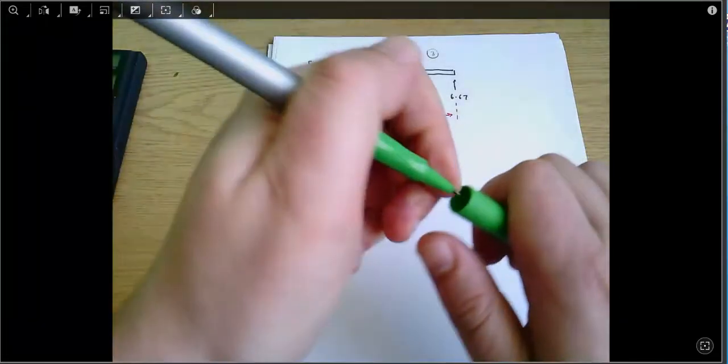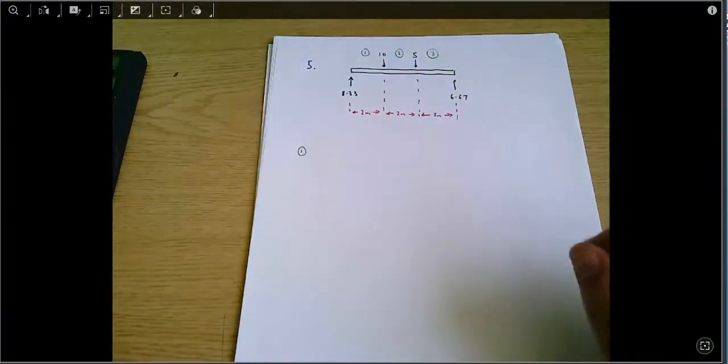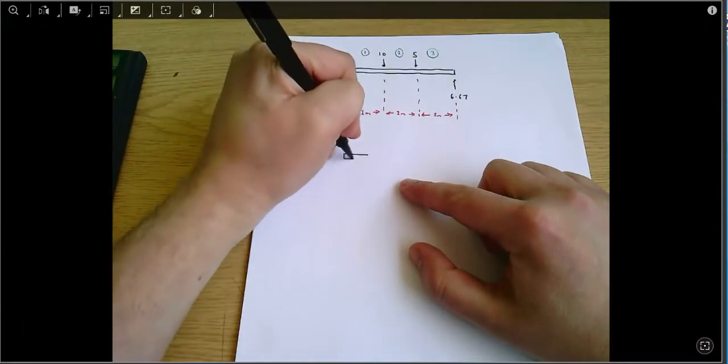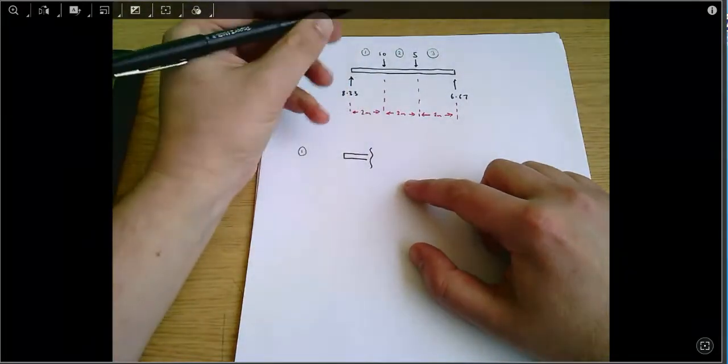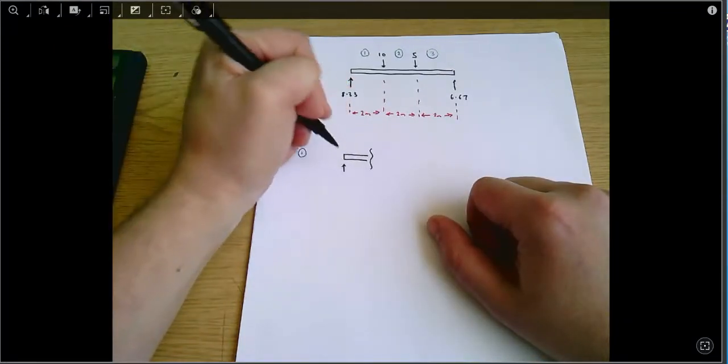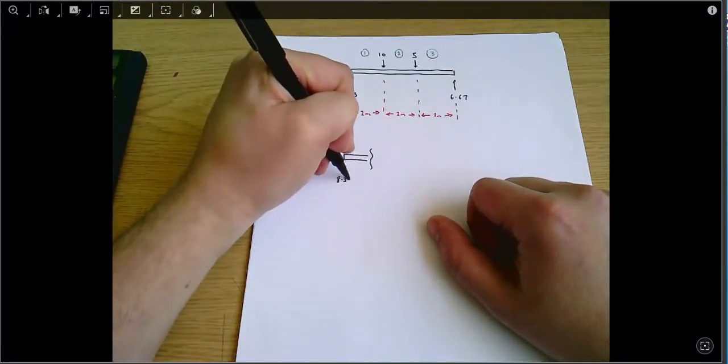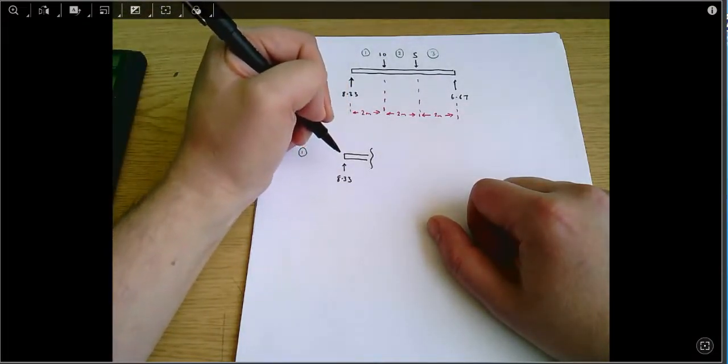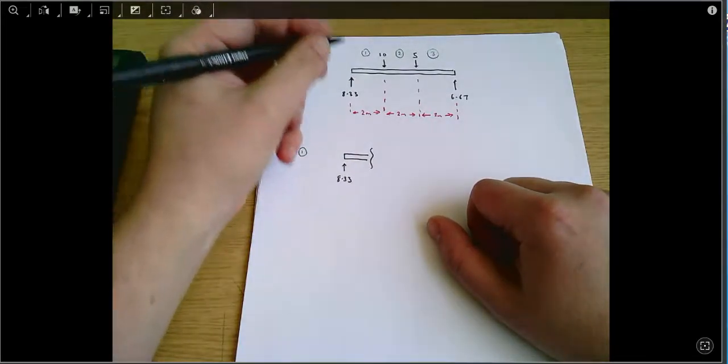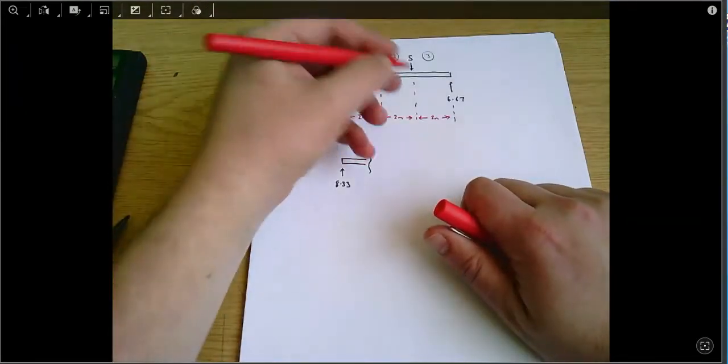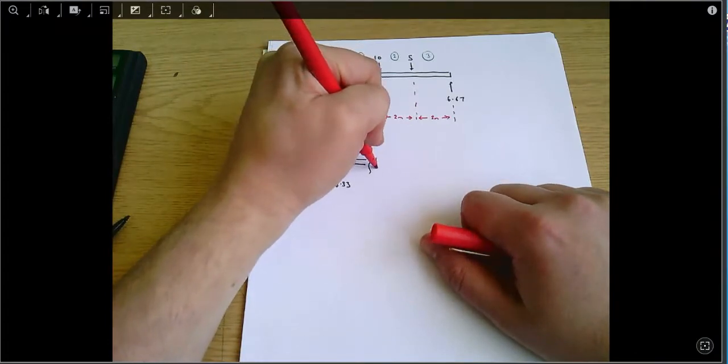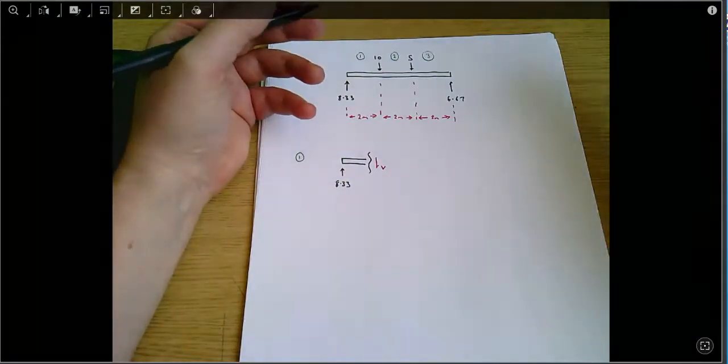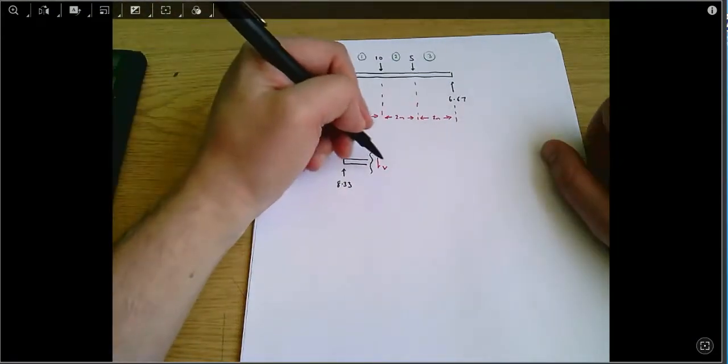So region 1. Remember to analyze forces within a beam we use the method of sections, and to use the method of sections we take an imaginary cut like so and we analyze all the forces acting on one side of that cut. Here I've chosen to the left of the cut, and then we can mark on a shear force, horizontal force, or a normal force and a moment. Here I'm only going to be interested in the shear force so I'm just going to mark that on for the time being.